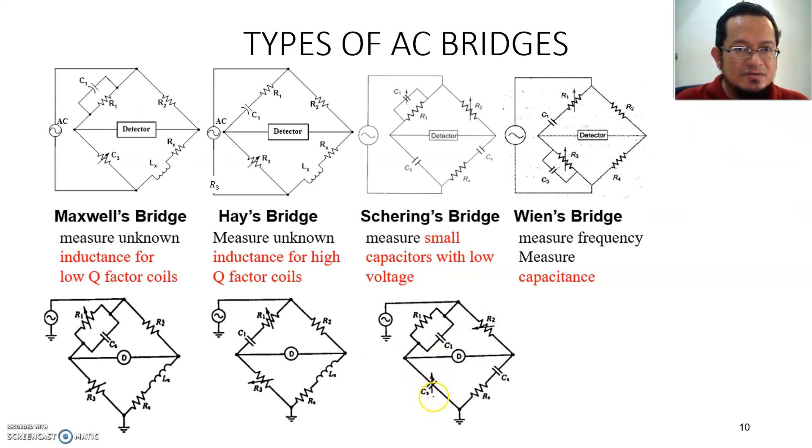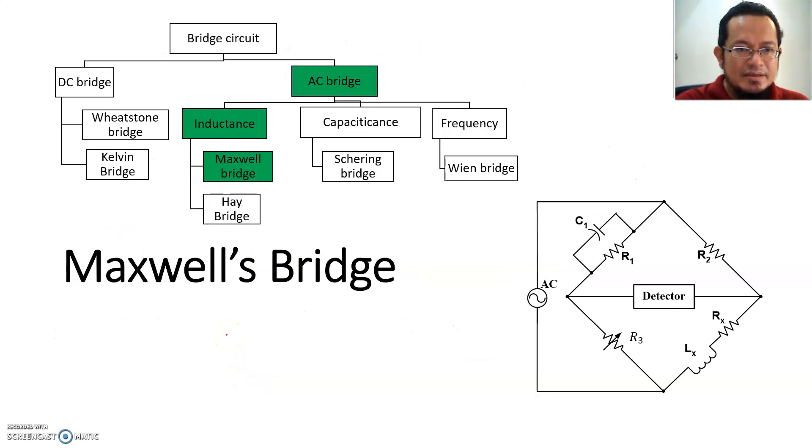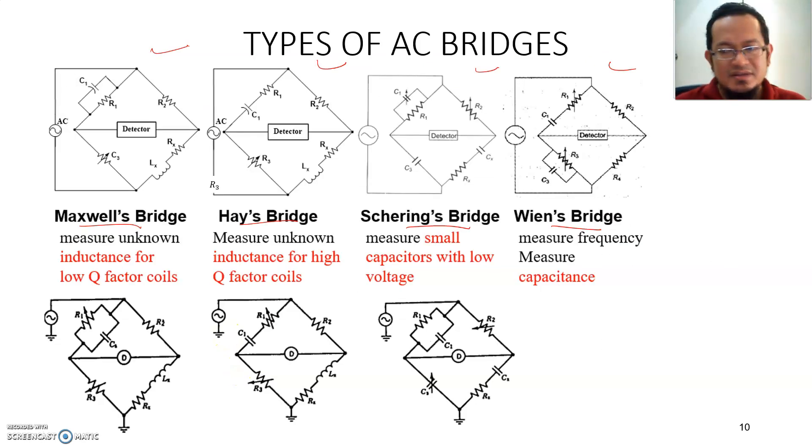There are four types of bridges that we're going to talk about: Maxwell Bridge, Hay's Bridge, Schering Bridge, and Wien's Bridge. These are all the summary of what the topology of all these bridges looks like. We're going to go through these bridges one at a time and we'll see you in the next class, inshallah. I'll see you again, thank you very much. Assalamualaikum.